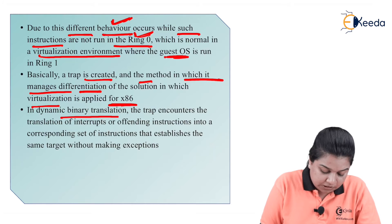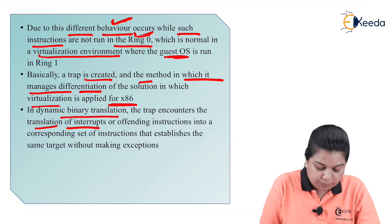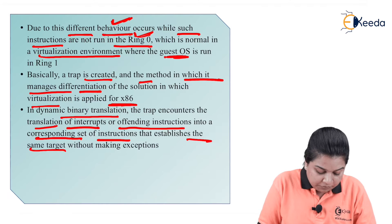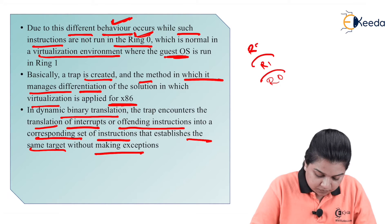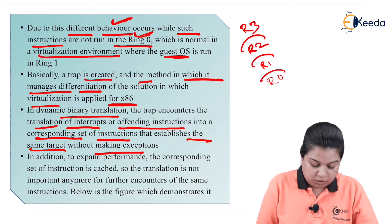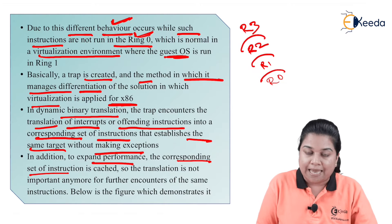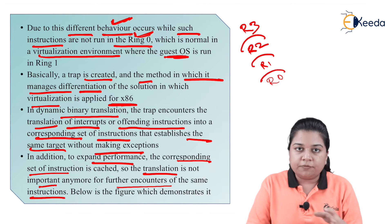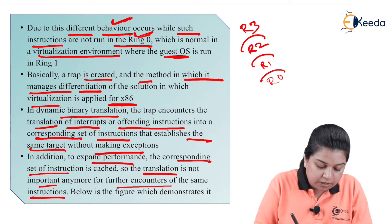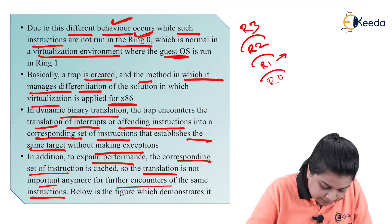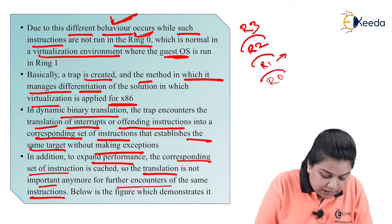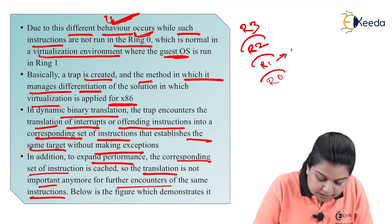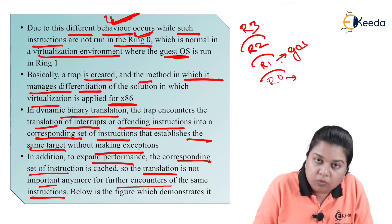In dynamic binary translation, the trap encounters the translation of interrupts or offending instructions into a corresponding set of instructions that establishes the same target without making exceptions. The corresponding set of instructions is cached so translation is not needed for further encounters of the same instructions.